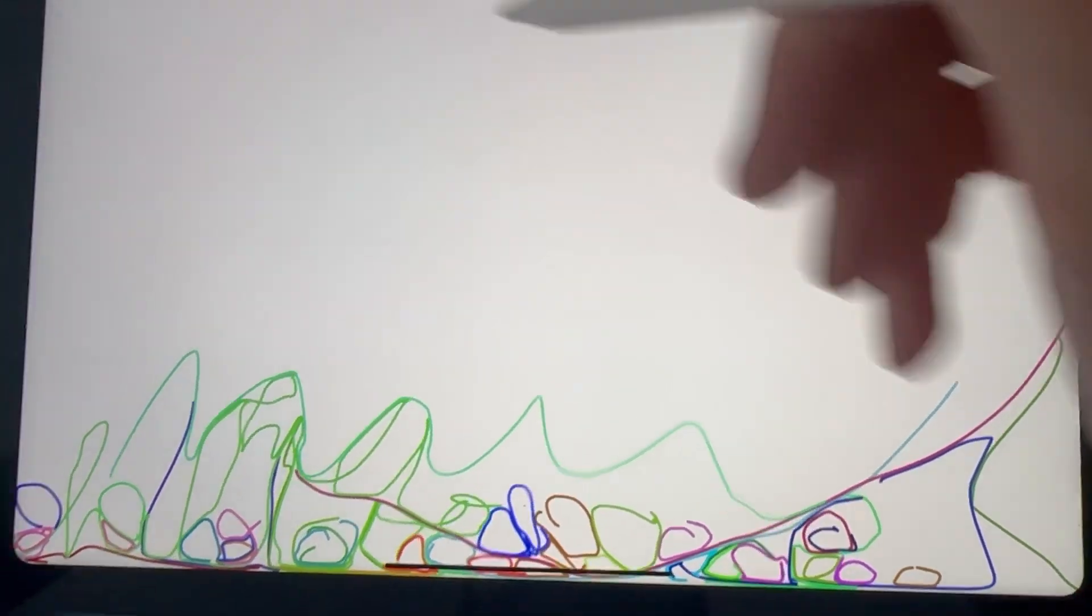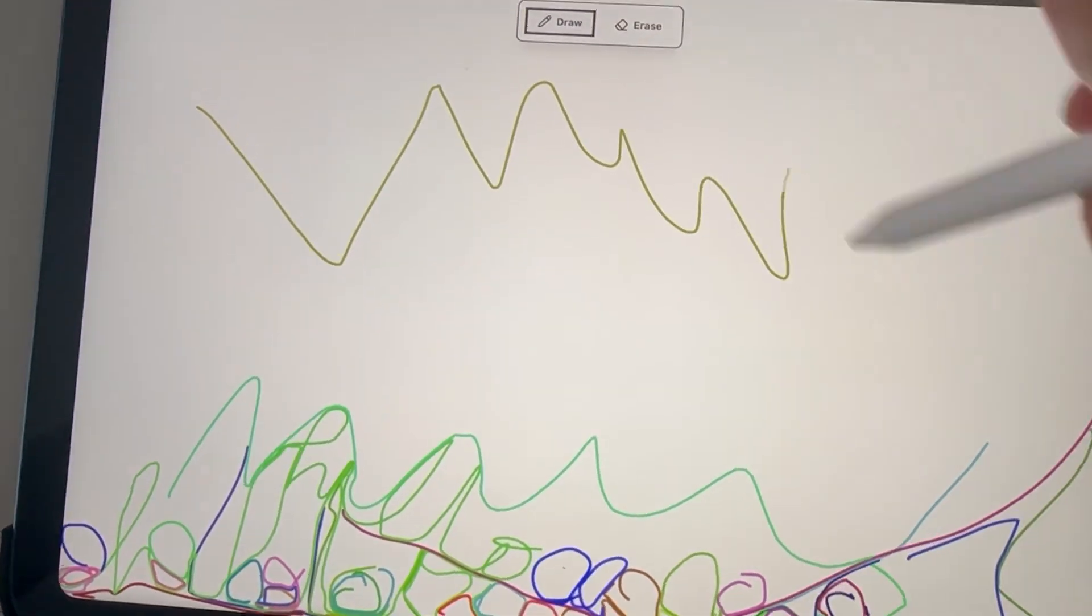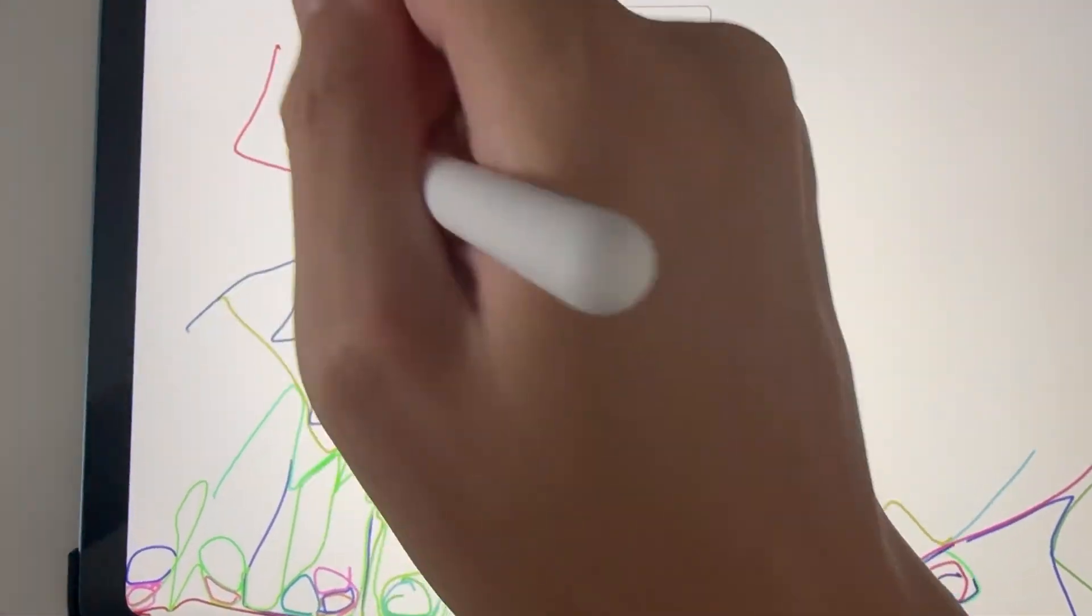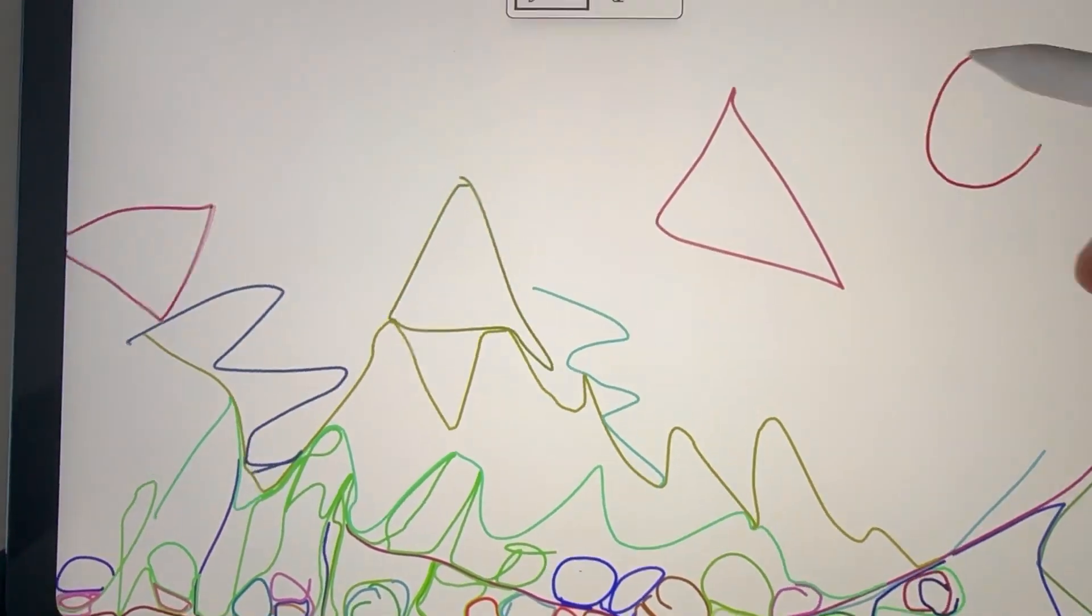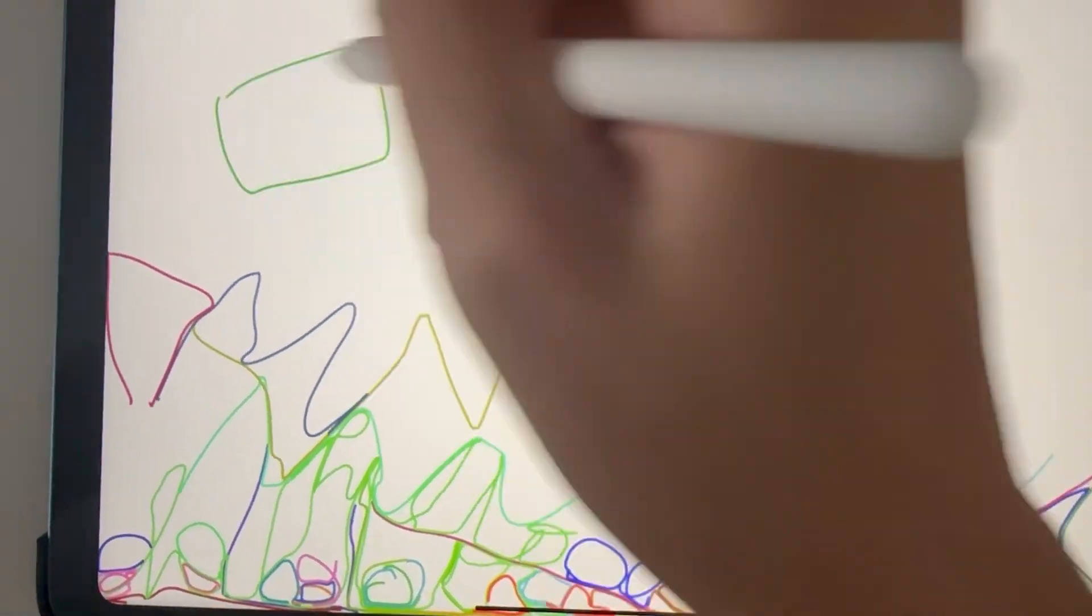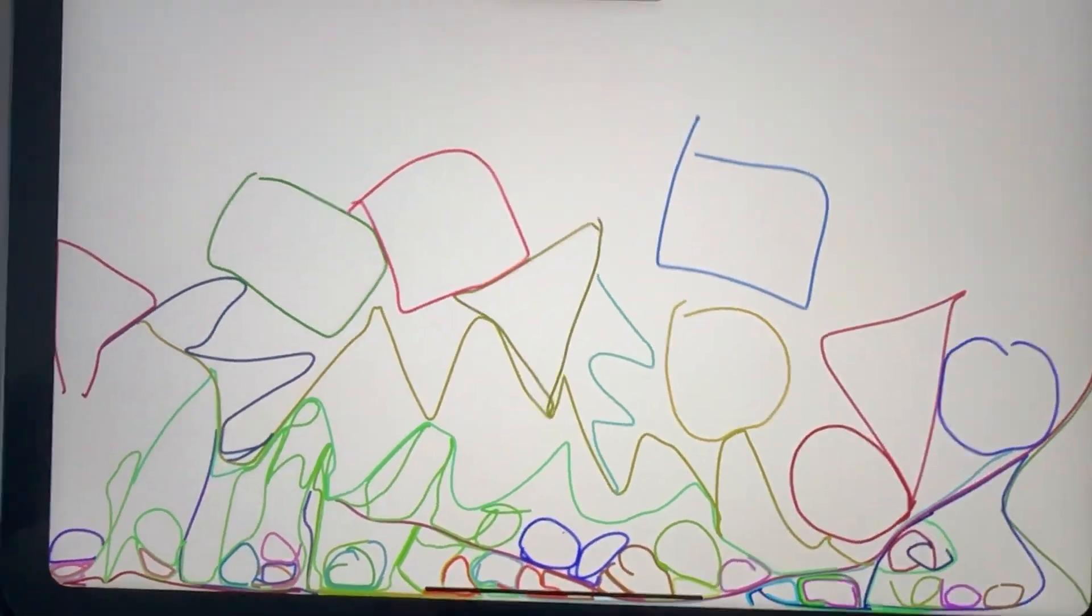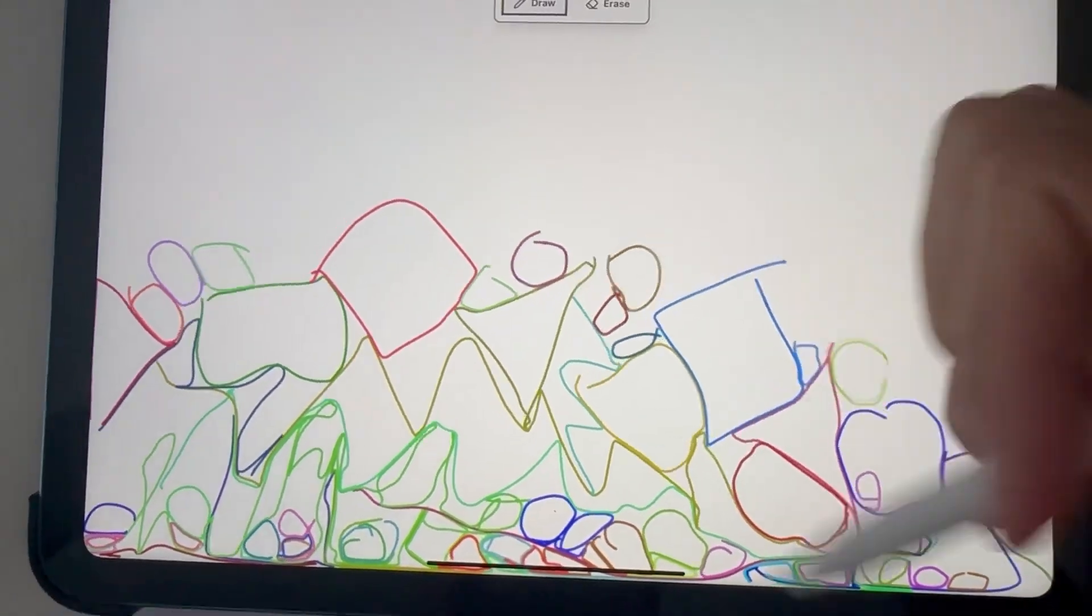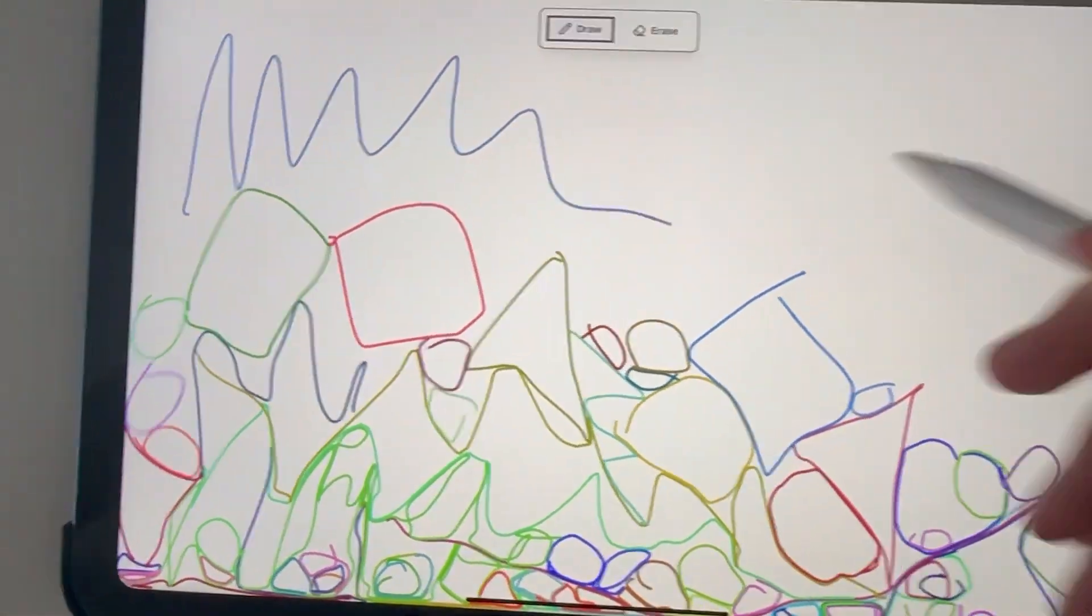Sometimes things do fall and intersect, but for the most part, thin lines are able to collide with each other pretty well now. I can draw all kinds of different shapes, and you can do multi-touch as well. It's quite fun.